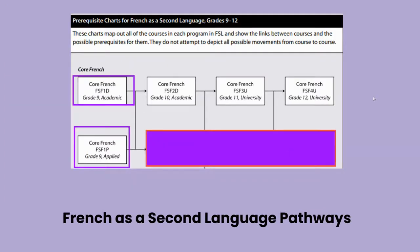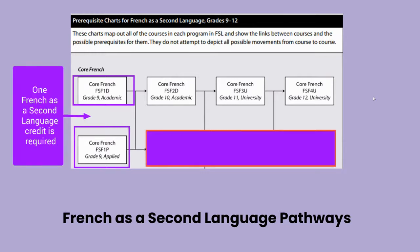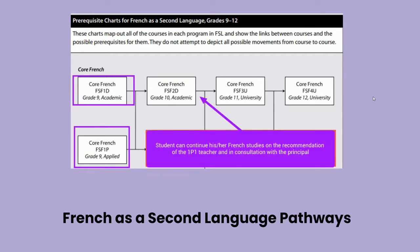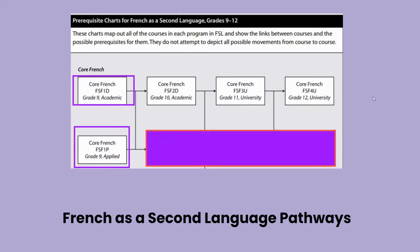In grade 9, students take French as the second language at either the academic or the applied level. Students within the academic stream can take core French FSF 2D at the academic level and then proceed to FSF at the 3U and 4U levels. Students after FSF 1P1 who wish to continue with their studies can do so. While FSF 2D1 requires FSF 1D1 as a prerequisite, a student from the 1P1 course may continue in their French language studies pathway in consultation with the principal and on the recommendation of their FSF 1P1 teacher.